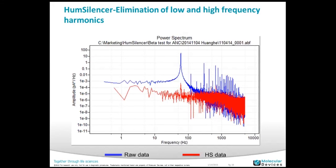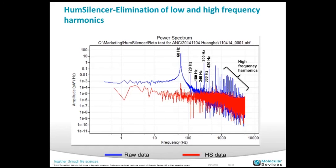I also mentioned that the Hum Silencer eliminates not only the 60 Hz or 50 Hz fundamental frequencies but also the high-frequency harmonics. Looking at the power spectrum of the signal, the blue line is the raw data and the red trace is the Hum Silencer data. You can see spikes at 60 Hz, 120 Hz, 180 Hz, 240 Hz, up to 420 Hz — all those spikes were eliminated. You don't see those spikes in the Hum Silencer traces, confirming that the high-frequency harmonics are clearly eliminated.